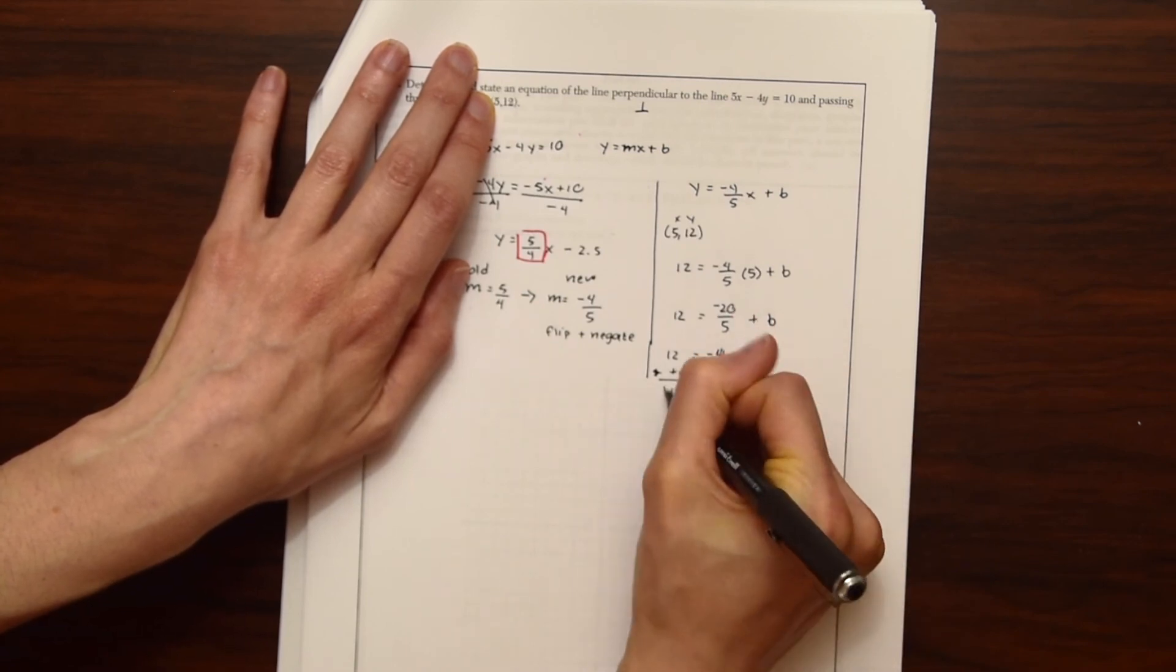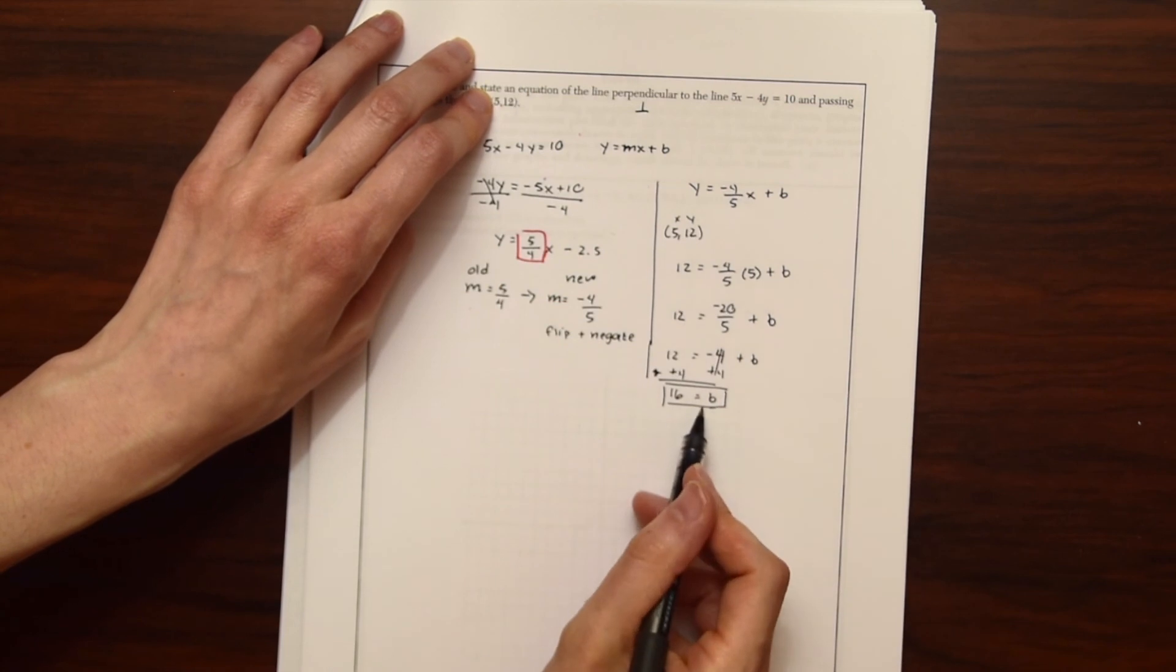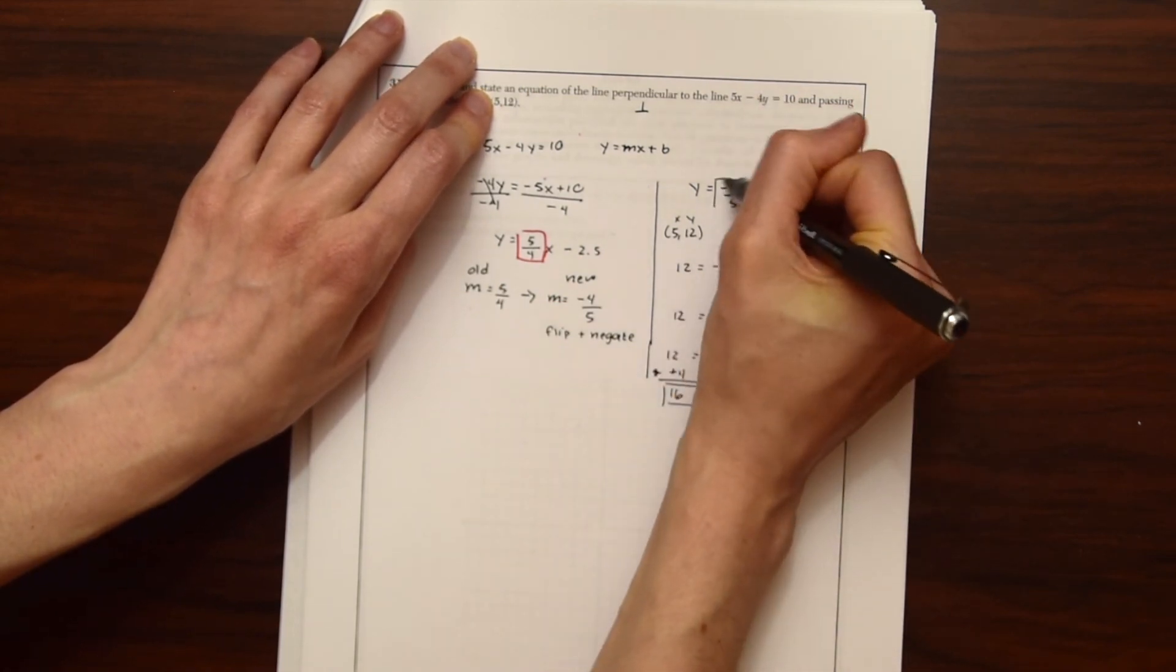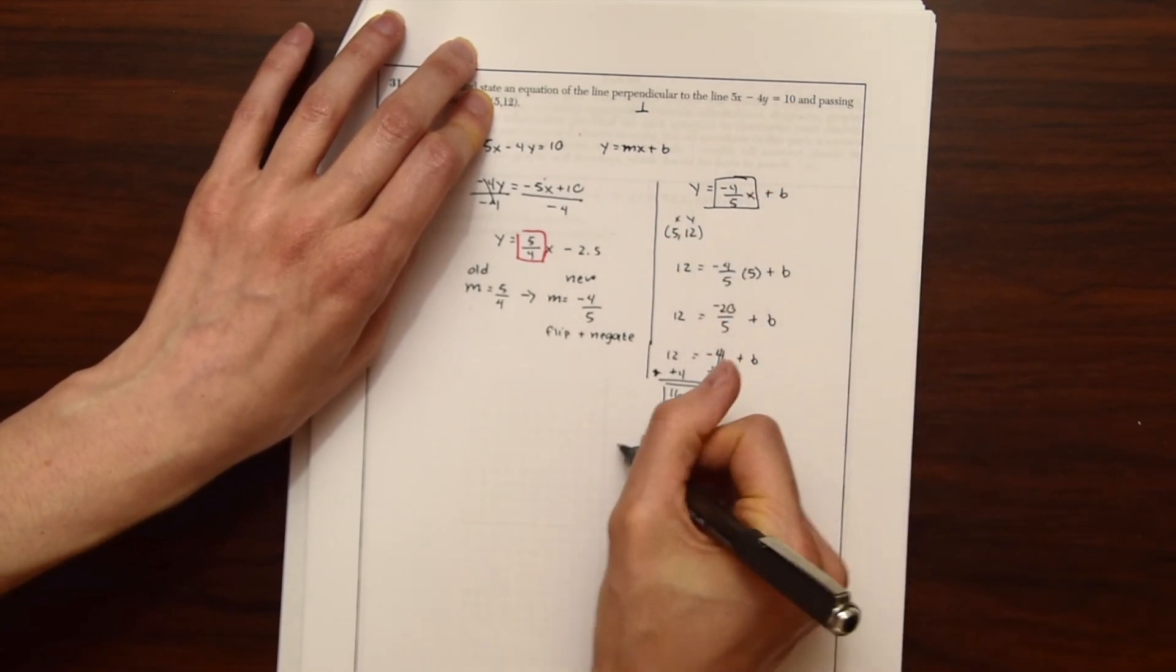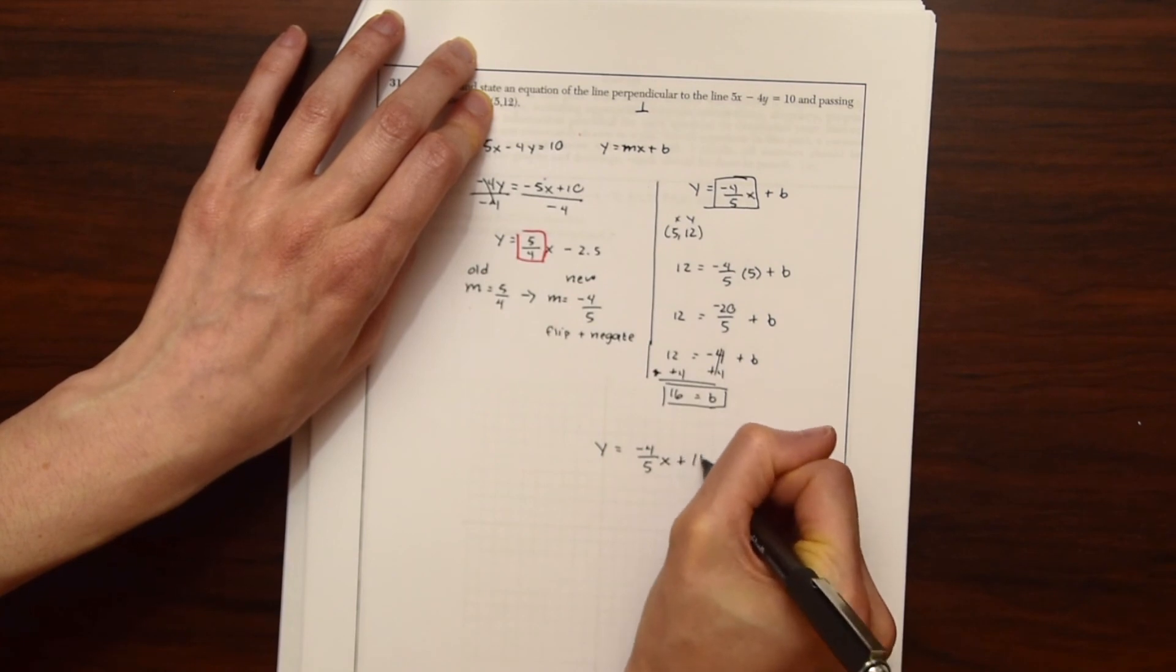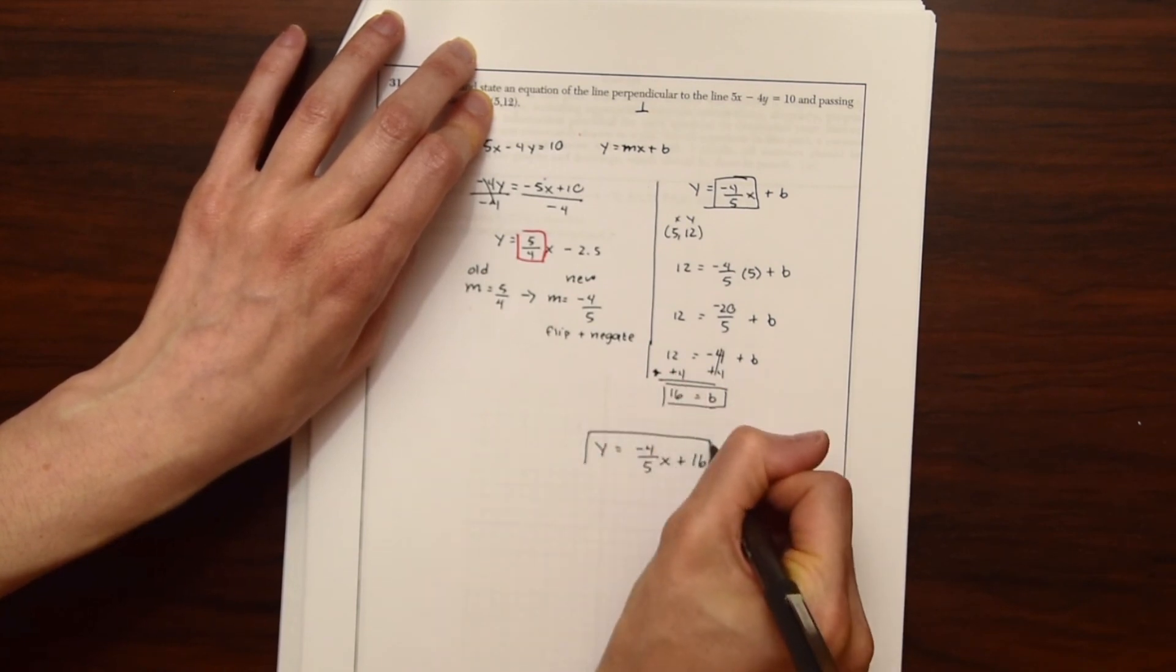So now we have a value for B and a value for our slope that we got earlier. And then we just put them all together for our answer. So Y is equal to negative four fifths X plus 16. And that's our answer.